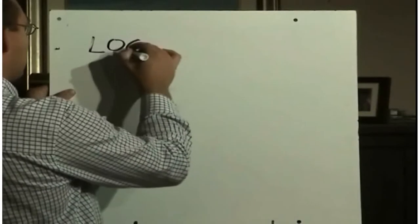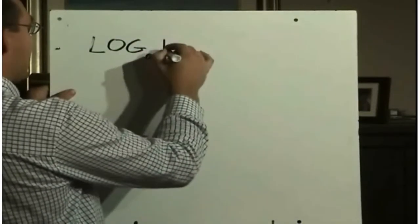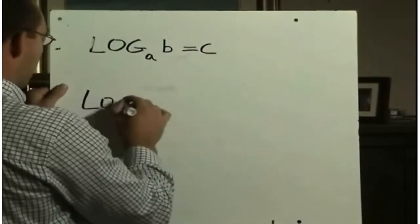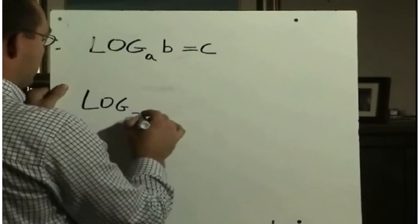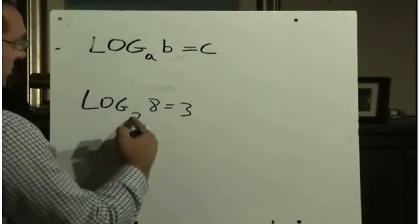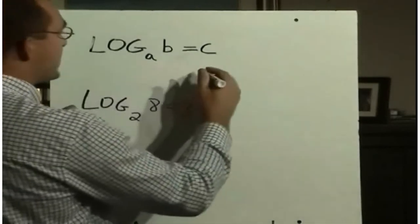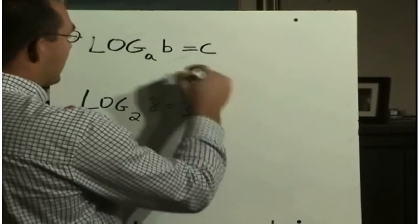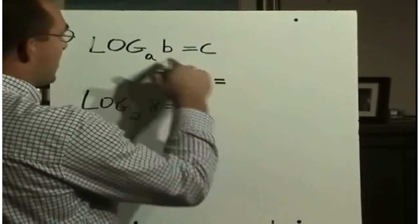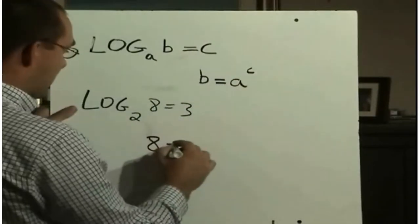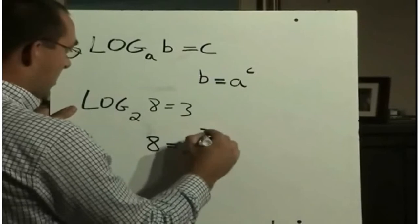So just to review how exponents work and logarithms work, if we had log base A of B equals C, so in other words, as an example, log base 2 of 8 equals 3, which is true, because 2 to the power of 3 equals 8, what does this mean? This means B will always equal A to the power of C, or in other words, 8 is equal to 2 cubed.